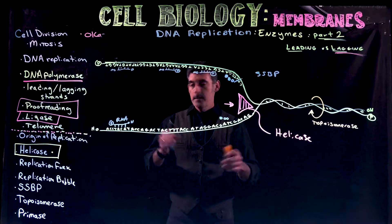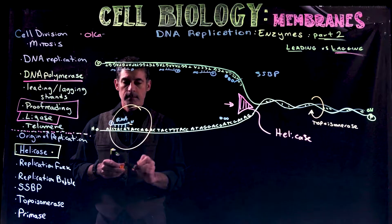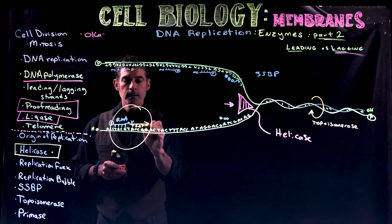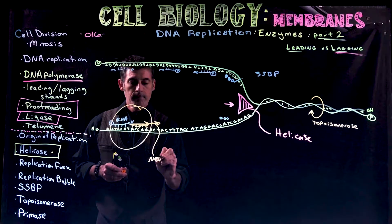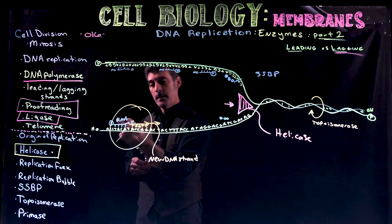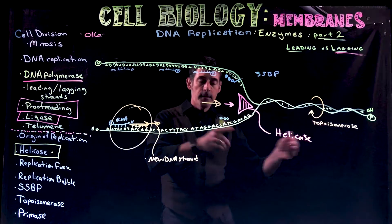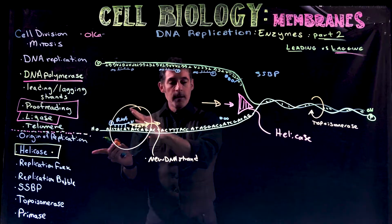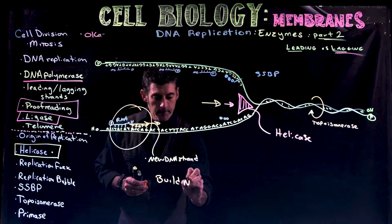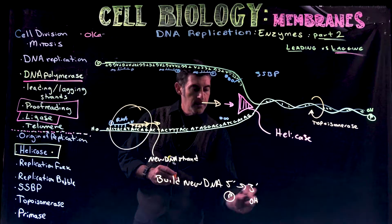DNA polymerase can come in and we're going to talk about leading and lagging strands. The DNA polymerase can work from this three prime OH and start to build new DNA — T, G, G, T, C, and so forth. A single strand is being made from the template strand by DNA polymerase using the primer to build. The overall direction of replication is moving this way, following along behind helicase. DNA is built in a five prime to three prime direction — that's a phosphate to hydroxyl direction.